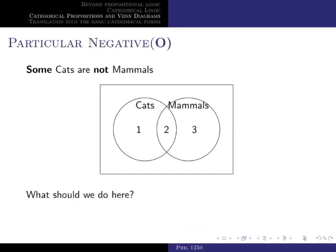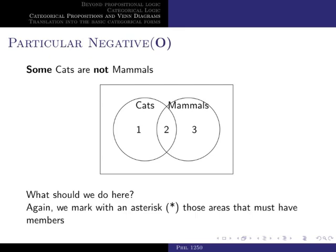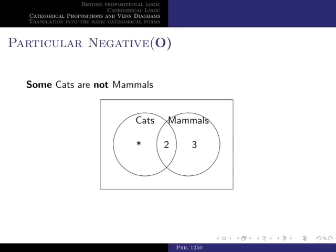The final form is for sentences that are particular and negative — form O. Our example is 'Some cats are not mammals.' Particular propositions are represented not by shading, but by placing an asterisk in areas. We place the asterisk in area one — the area of those cats that are not mammals — saying that the set of cats that are not mammals is not empty; that is, there is at least one cat that is not a mammal.